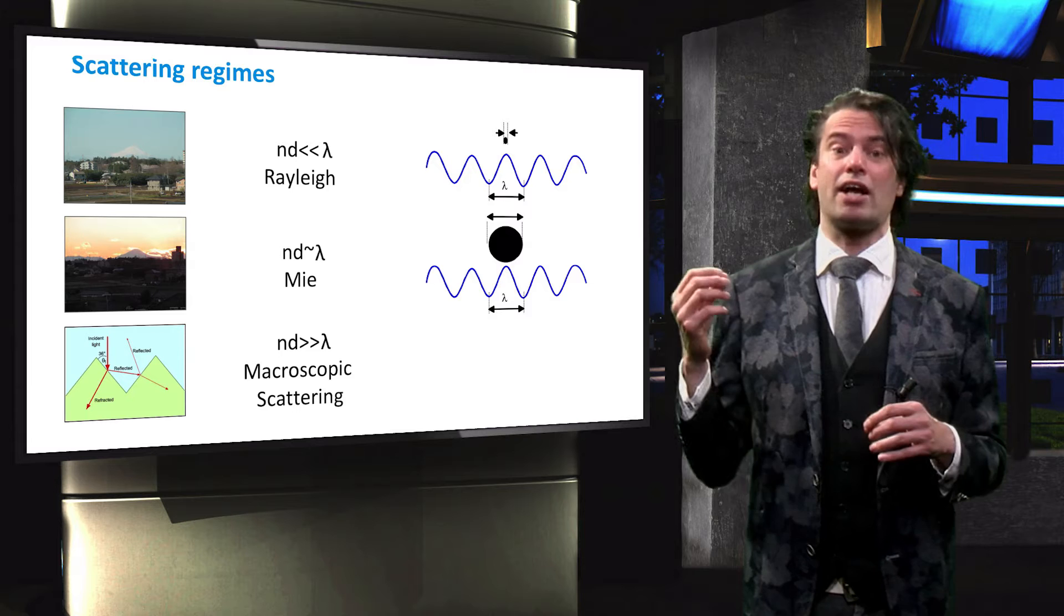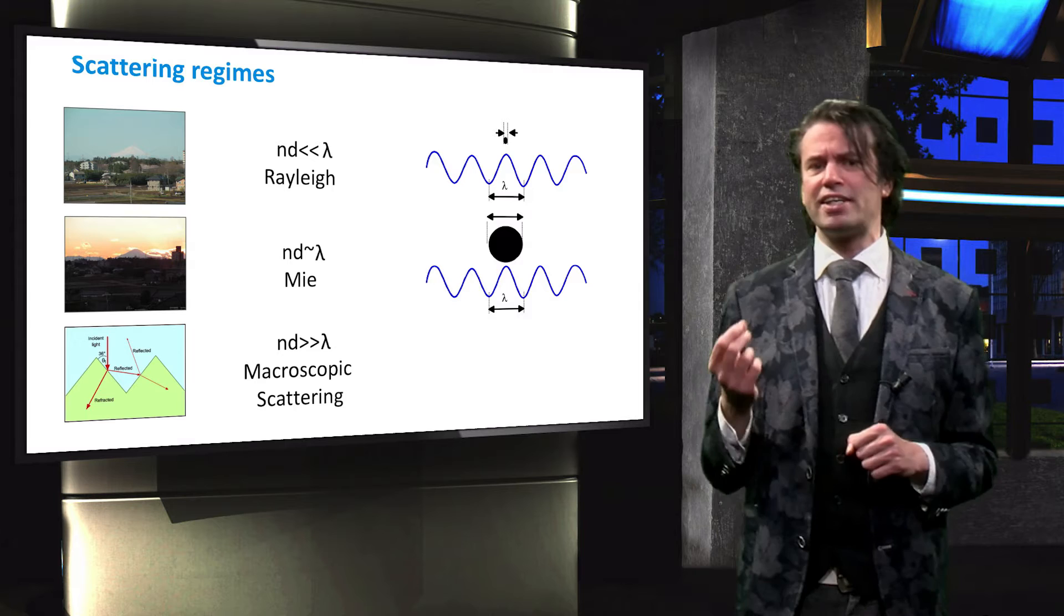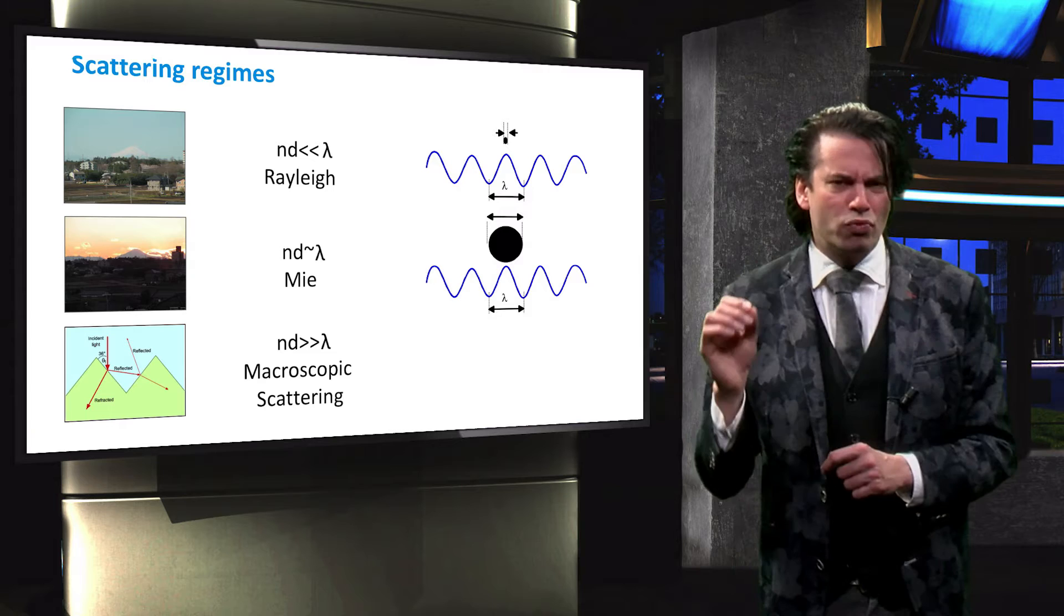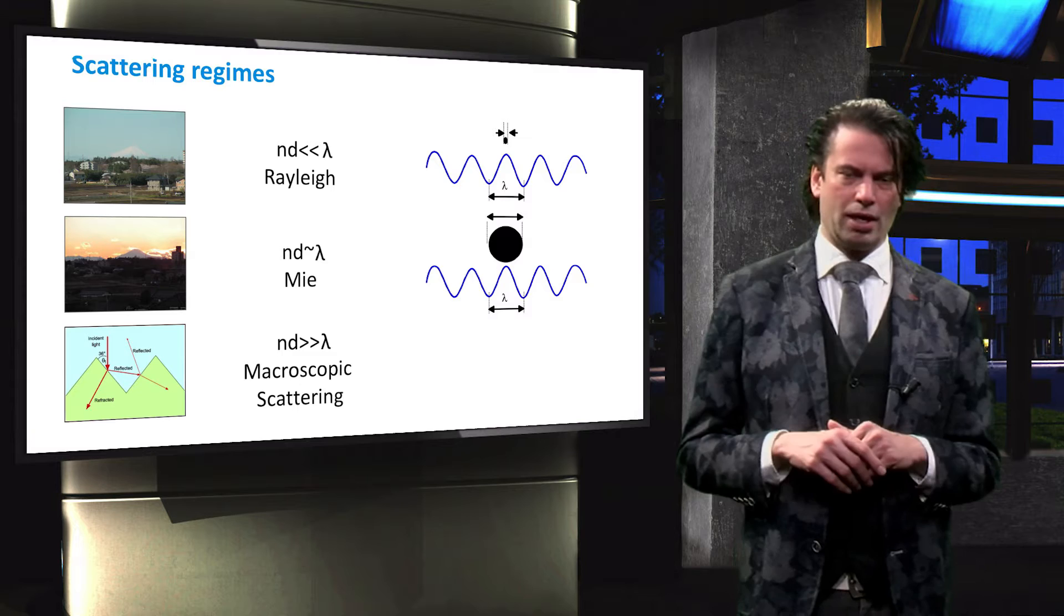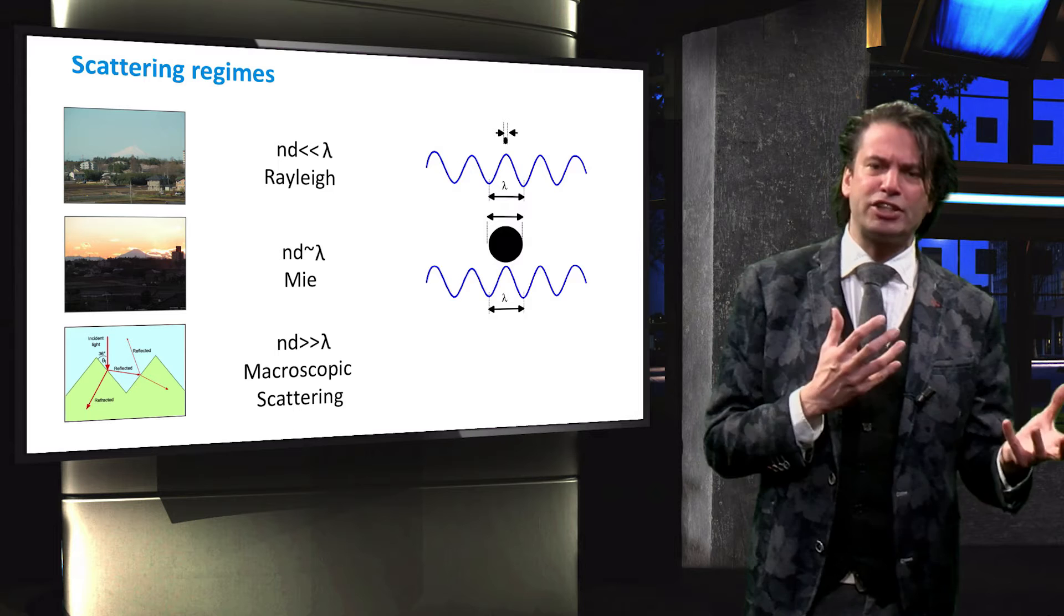If the product of the refractive index and the diameter of a particle is much smaller than the wavelength of a photon, a type of scattering takes place that is known as Rayleigh scattering. However, if the refractive index is of the same order of magnitude as the photon wavelength, then we enter the domain of Mie scattering. Microscopic scattering occurs for particles much larger than the wavelength. Microscopic scattering involves the refraction and reflection we discussed earlier in this section.